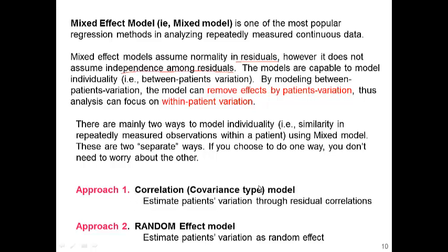High correlations indicate much variation between patients and less variation within patients, so we achieve the goal by modeling correlation. Today we are using a different approach: instead of looking at correlation, we look at random effects. The purpose is the same — to introduce between-patient variation (patient individuality) in the model so we can remove it, and the analysis can focus on what happens within the patient, which is the focus of repeated measures analysis.